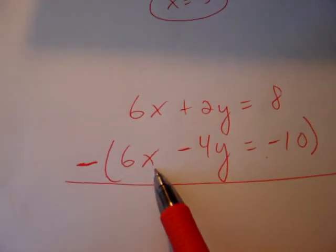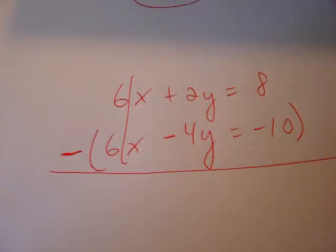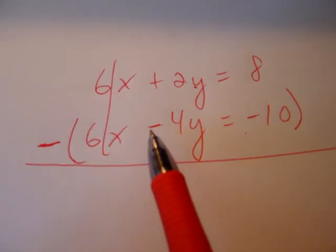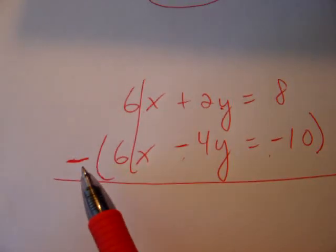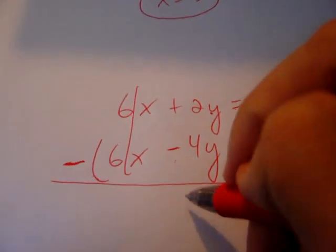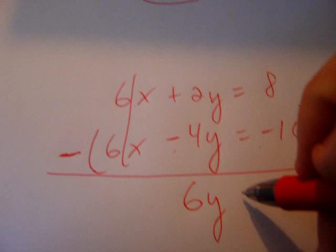6x take away 6x is 0. They cancel. Now, we have 2y take away negative 4y. Take away a negative is adding, so 2y plus 4y is 6y equals.